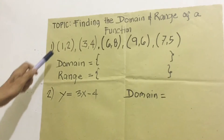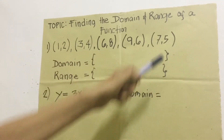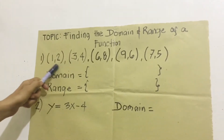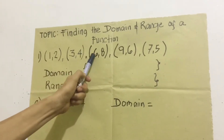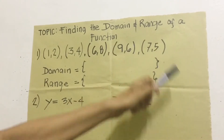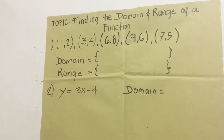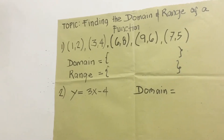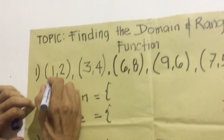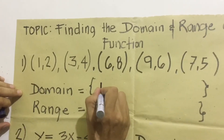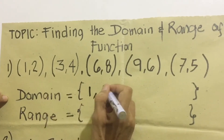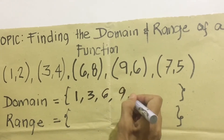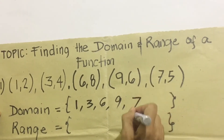This given coordinates also belongs to functions because for every coordinate there is x and y. All the x values are called the domain. To find the domain, we just list the x-coordinates: 1, 3, 6, 9, and 7.